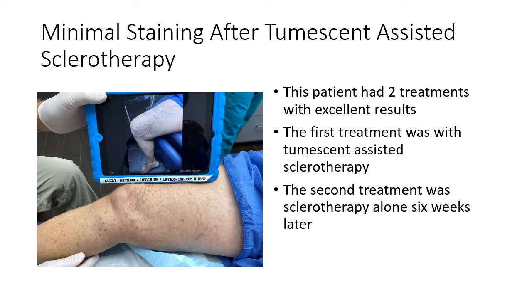This patient had two treatments with excellent results. The first treatment was with tumescent-assisted sclerotherapy; the second treatment was sclerotherapy alone six weeks later. The average for clearance is one to two treatments, even in large complexes in our clinic.